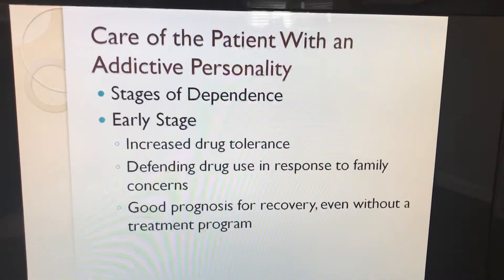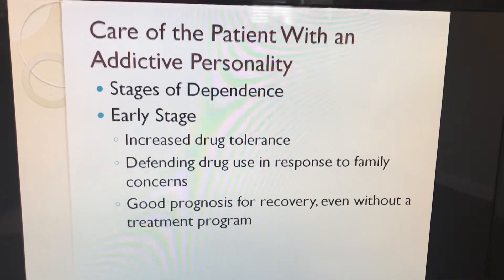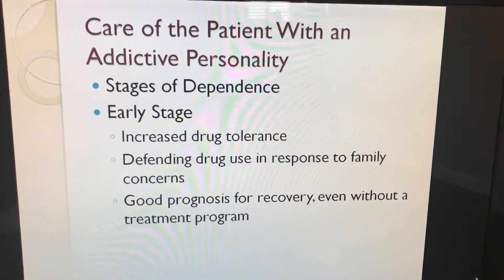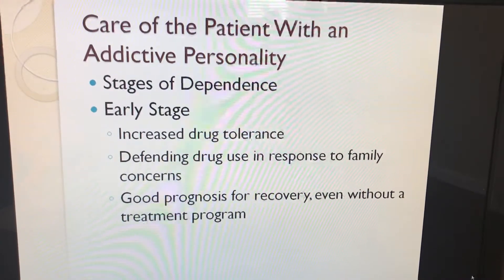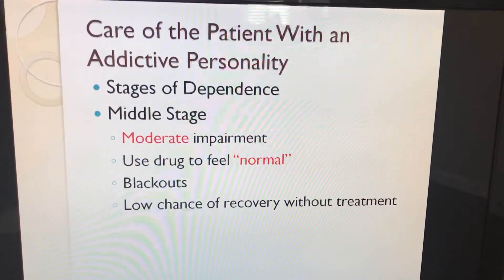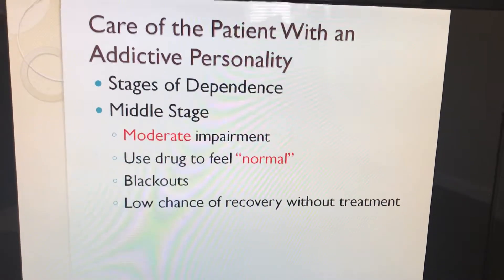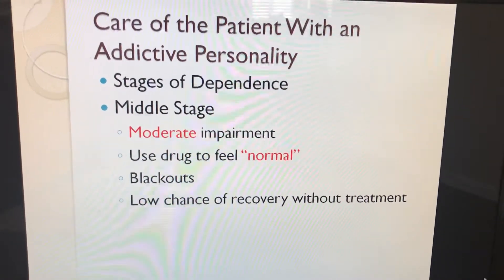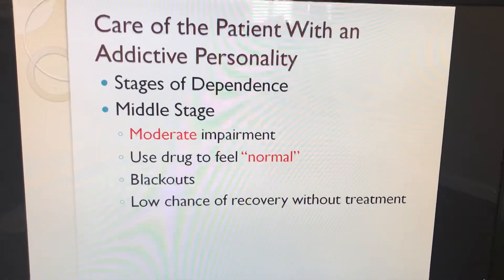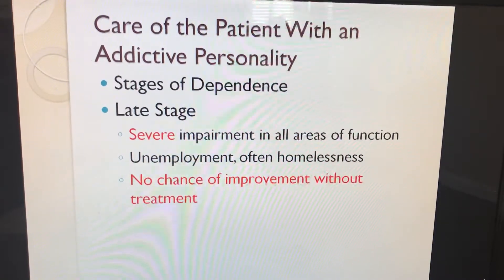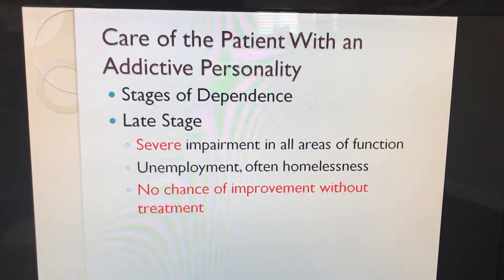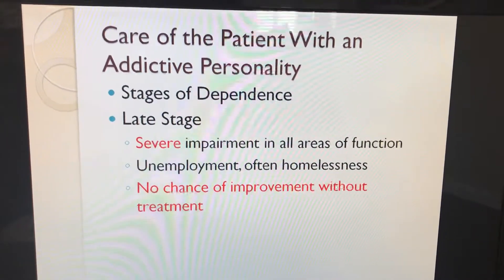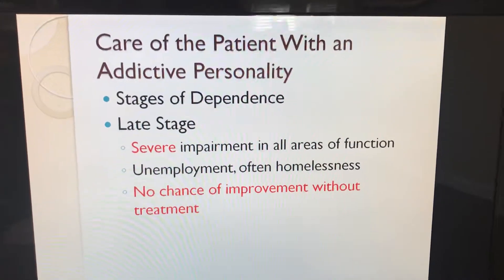There are three stages of dependence. In the early stage, there is increased drug tolerance, defending drug use in response to family concerns, and they have a good prognosis for recovery even without a treatment program. In the middle stage, they have moderate impairment; they use the drug to feel normal, experience blackouts, and have a low chance of recovery without treatment. In the late stage, there is severe impairment in all areas of function, unemployment, and often homelessness, and there is no chance of improvement without treatment.